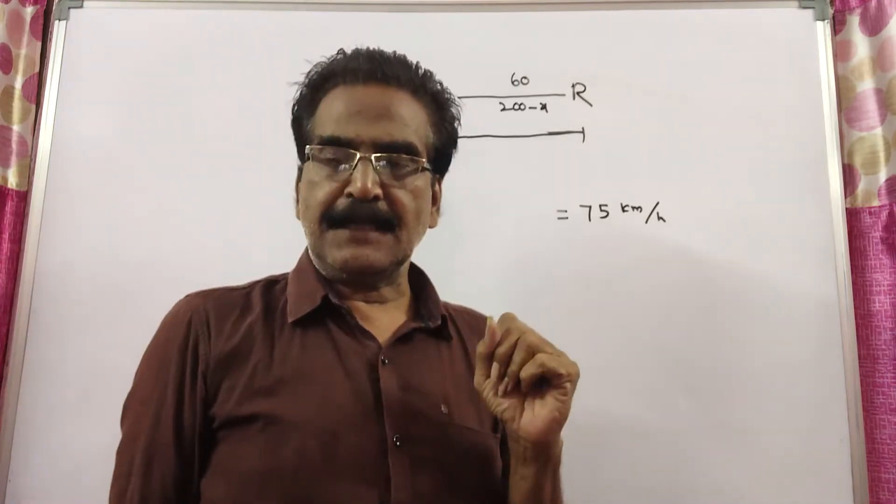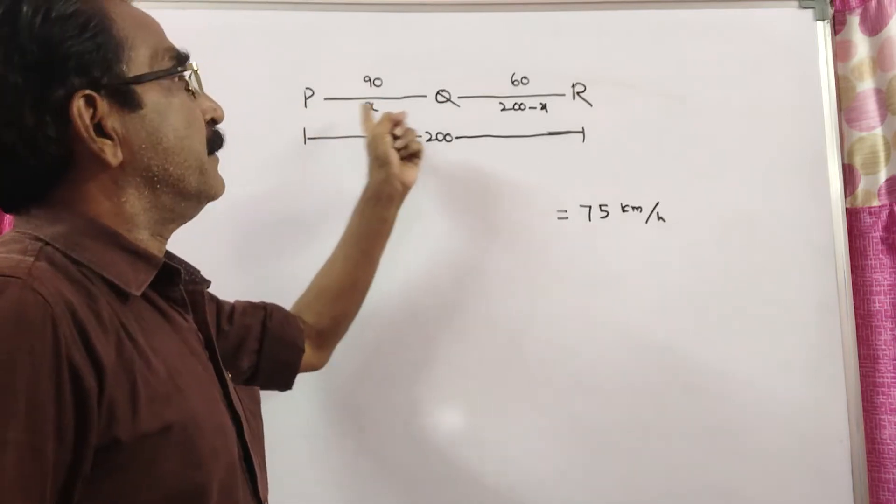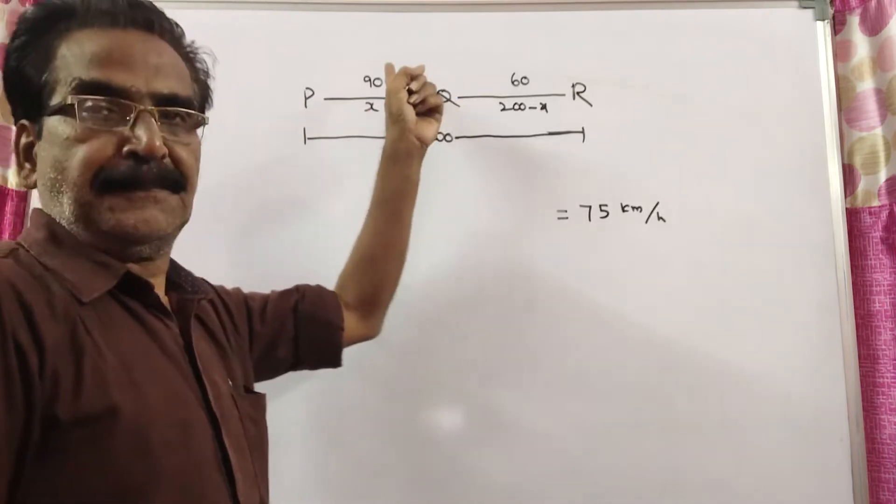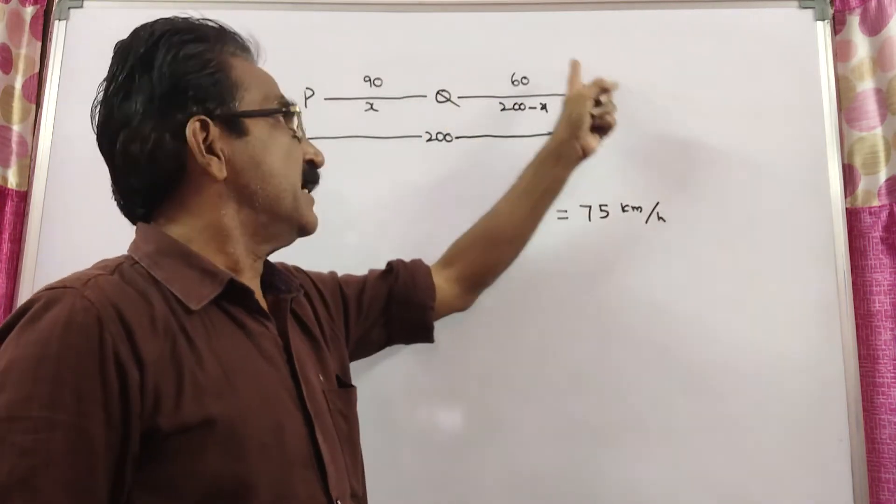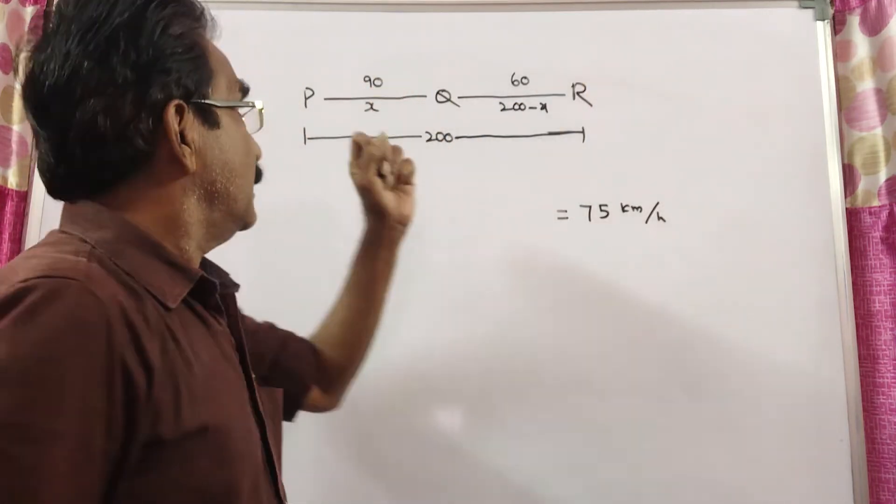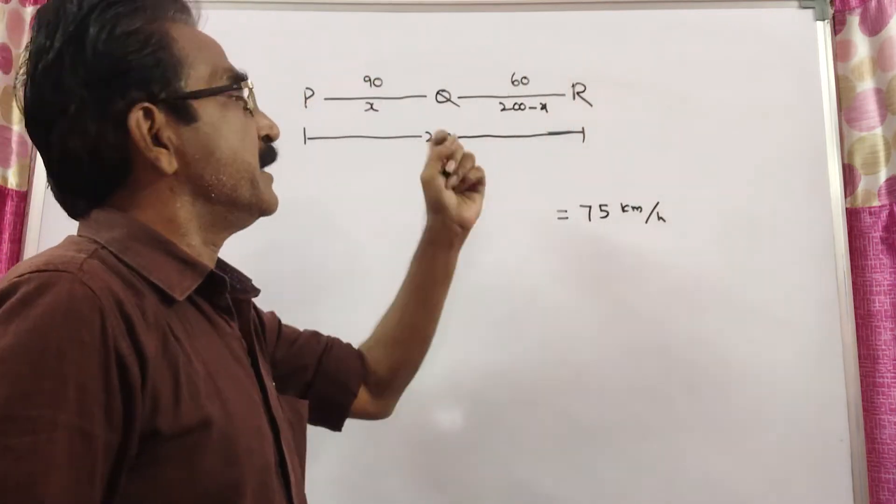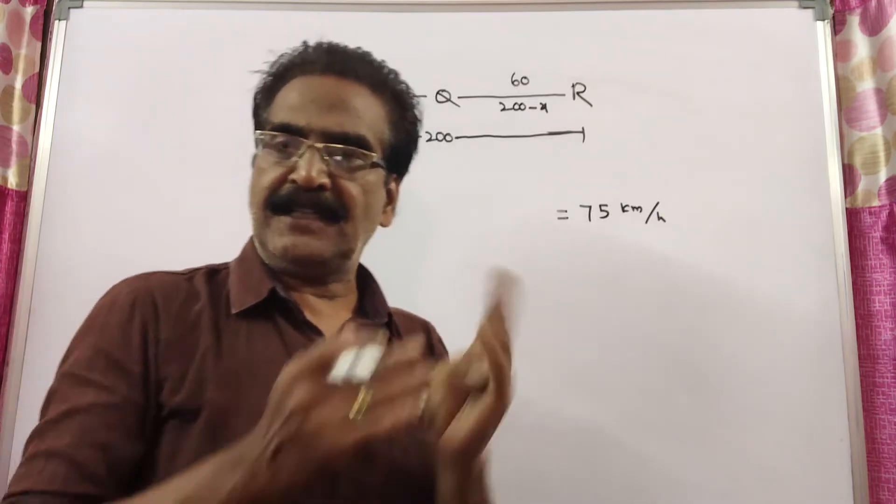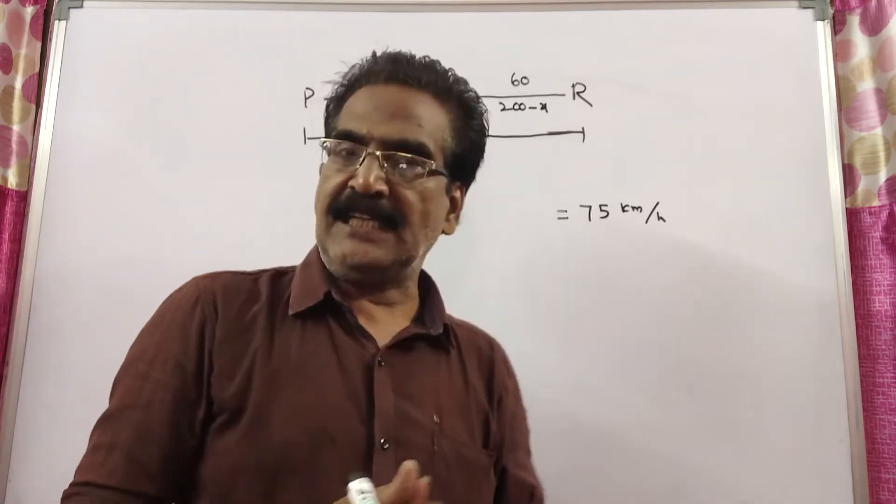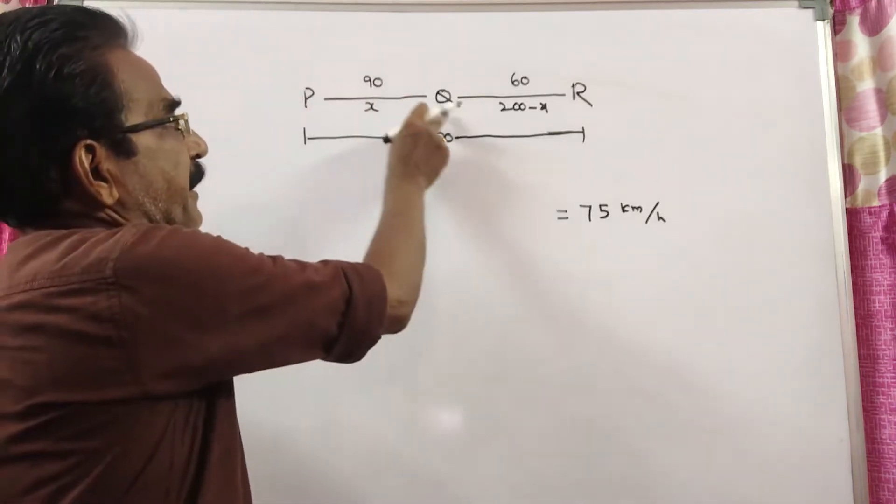The problem is given in the description box. A man travels from P to Q at a speed of 90 kmph and Q to R at 60 kmph. The distance between P and R is 200 km and his average speed for the whole journey is 75 kmph. What is the distance between P and Q?